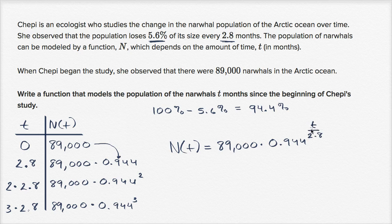And so notice, when t equals 0, all of this turns into 1. You raise something to the 0 power, it just becomes 1, you have 89,000. When t is equal to 2.8, this exponent is 1, and we're going to multiply by 0.944 once. When t is 5.6, the exponent is going to be 2, and we're going to multiply by 0.944 twice. And I'm just doing the values that make the exponent integers, but it's going to work for the ones in between. I encourage you to graph it or to try those values on a calculator if you like. But there you have it, we're done. We have modeled our narwhals.